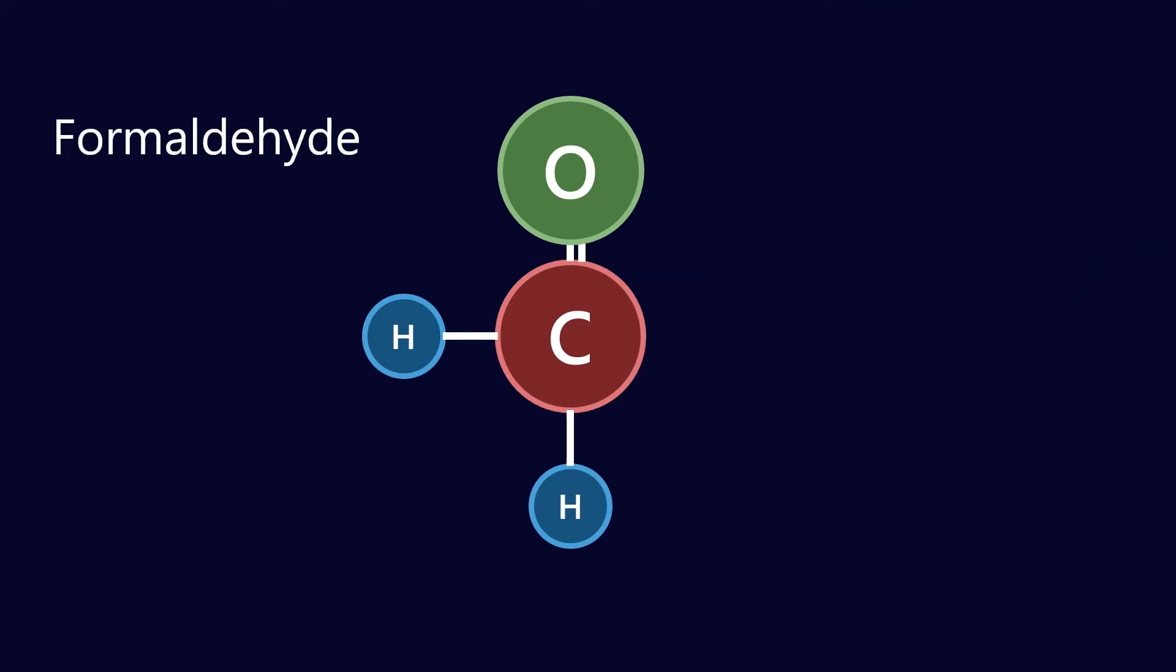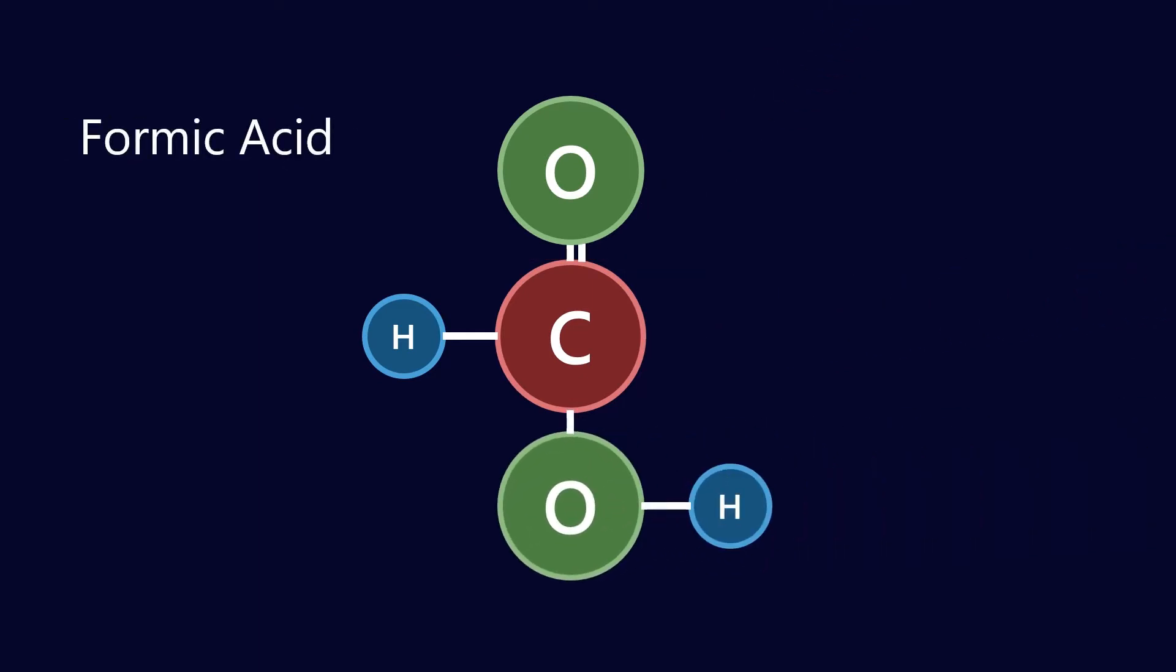If you oxidize it again, you get formaldehyde, and oxidizing it again, you get formic acid. Now formic acid is interesting because if you look at this functional group COOH, that is what we call a carboxyl group. So formic acid is the simplest of all the carboxylic acids. And if I were to change that left hand hydrogen, that could be any number of molecules. We could have polymers, we could have esters, we could have naphthalenes or anything. So there are infinite combinations of different types of carboxylic acids that can be formed.